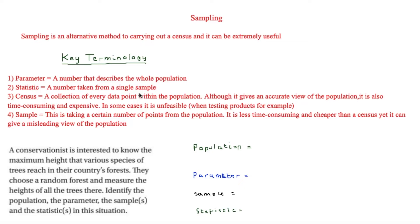A sample is where you take a certain number of data points from a population. It is less time consuming and cheaper than a census, yet it can give a misleading view of a population. For example, you could end up with a lot of outliers, which would give a misleading view of the whole population.